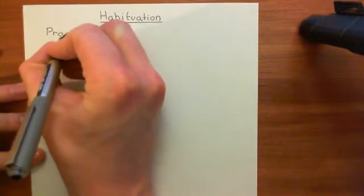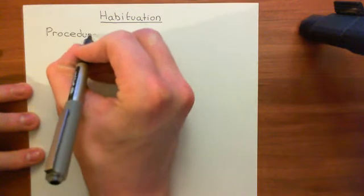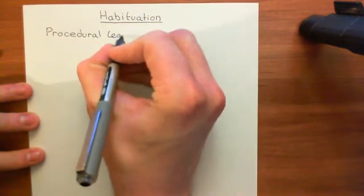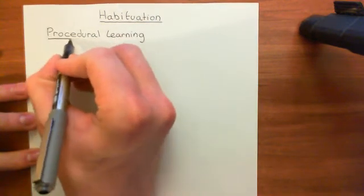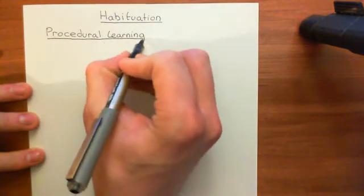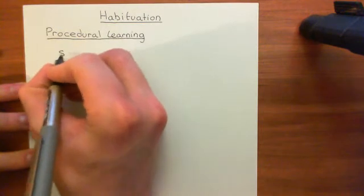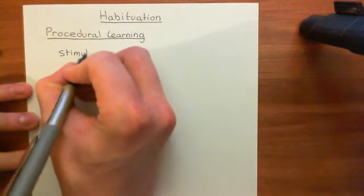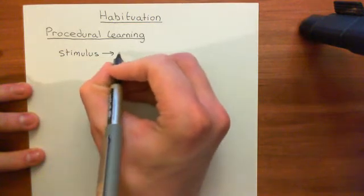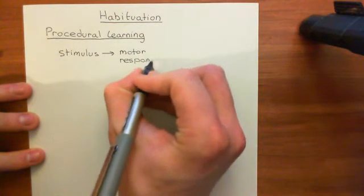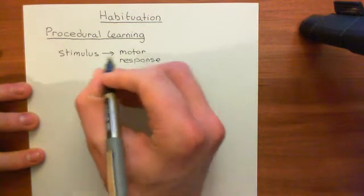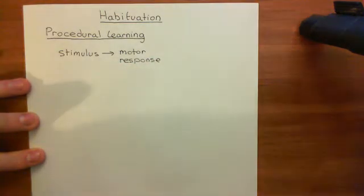Let's start off with what procedural learning is. Procedural learning is quite difficult to actually define, but it's a very robust form of learning. Basically, it is an alteration to motor responses to stimuli. Usually, you get some sort of sensory stimulus and then some sort of motor response occurs. Procedural learning involves changing the motor response that you initiate to this stimuli.